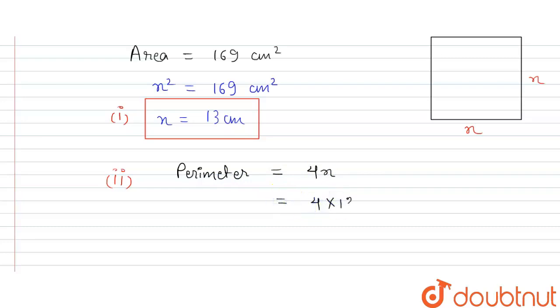4 times side of the square is 13 centimeter. So this value is equal to 52 centimeter. This is our final answer. Thank you.